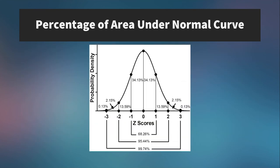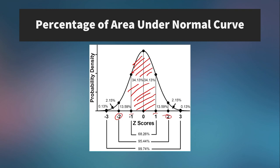Here is a picture of the normal curve with the most frequently used z-scores and percentages. From 1 to negative 1 we have 68% of all scores. If we go out another standard deviation each way to 2 and negative 2, we get an additional about 13.5% on each side. So between negative 2 and 2 standard deviations we have over 95% of all scores. And between 3 and negative 3, we have 99.7% of scores.